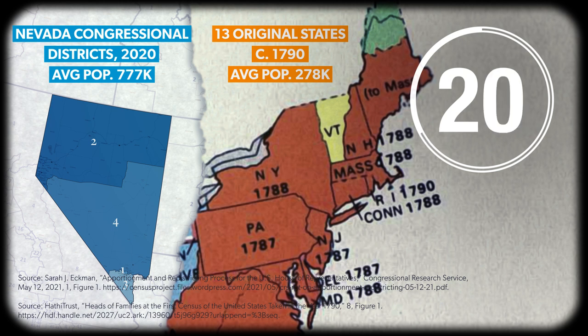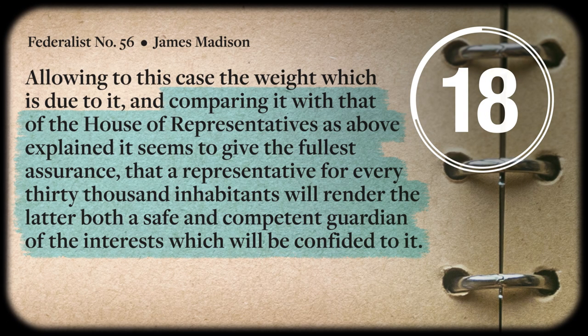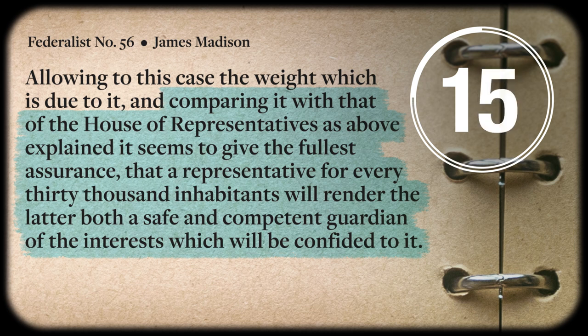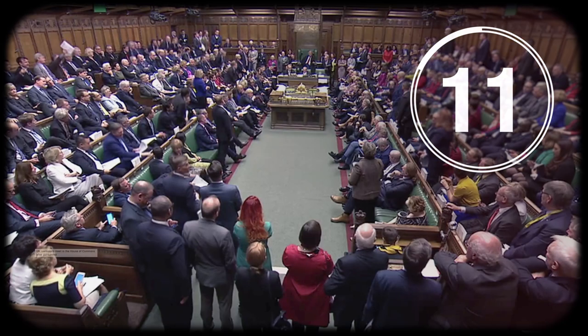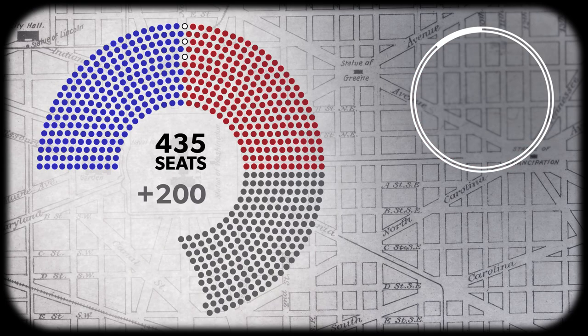So what can we do about that? Madison might suggest we increase the size of the House. In Federalist 56, he uses the British House of Commons as a model for the size of the House. Today, the Commons has 650 seats and works reasonably well. So maybe we could add 200 more seats to the House without undermining its ability to legislate. That would make our House and our government more representative.